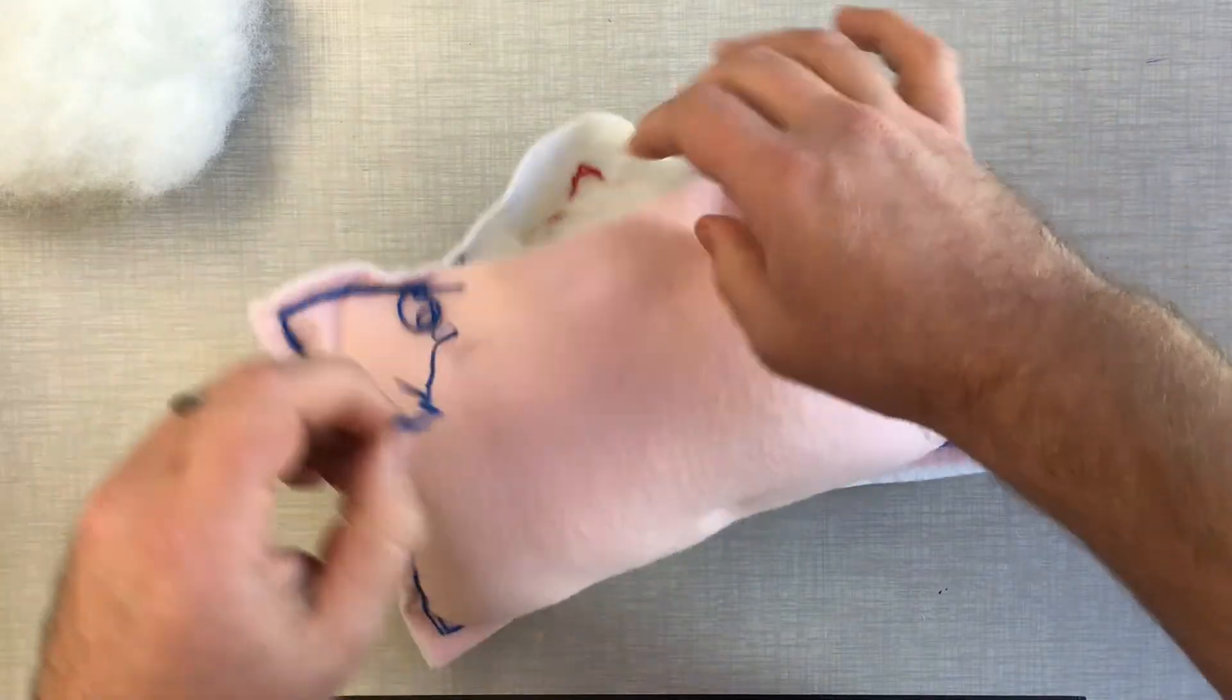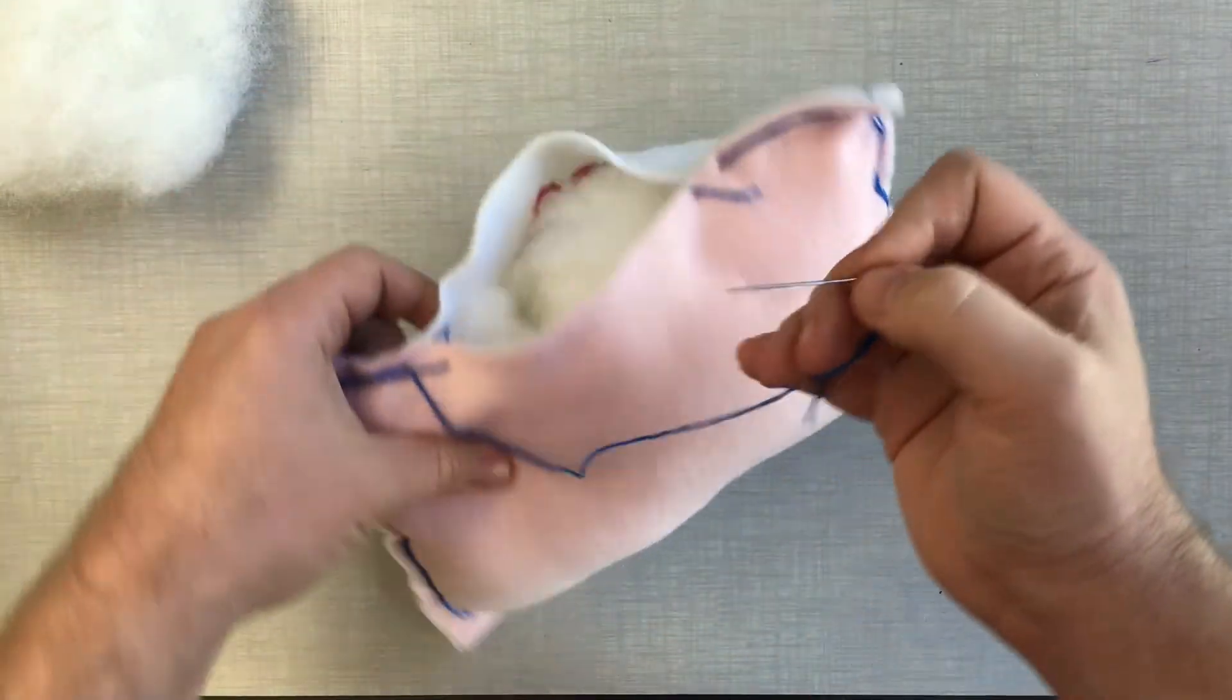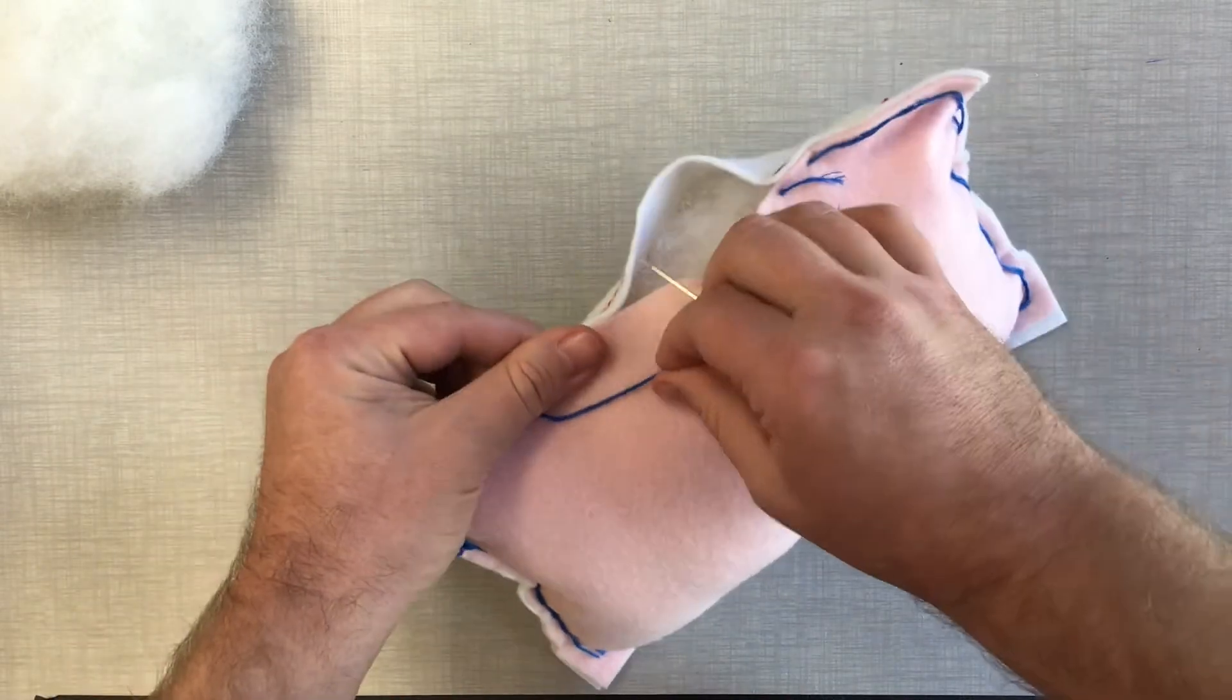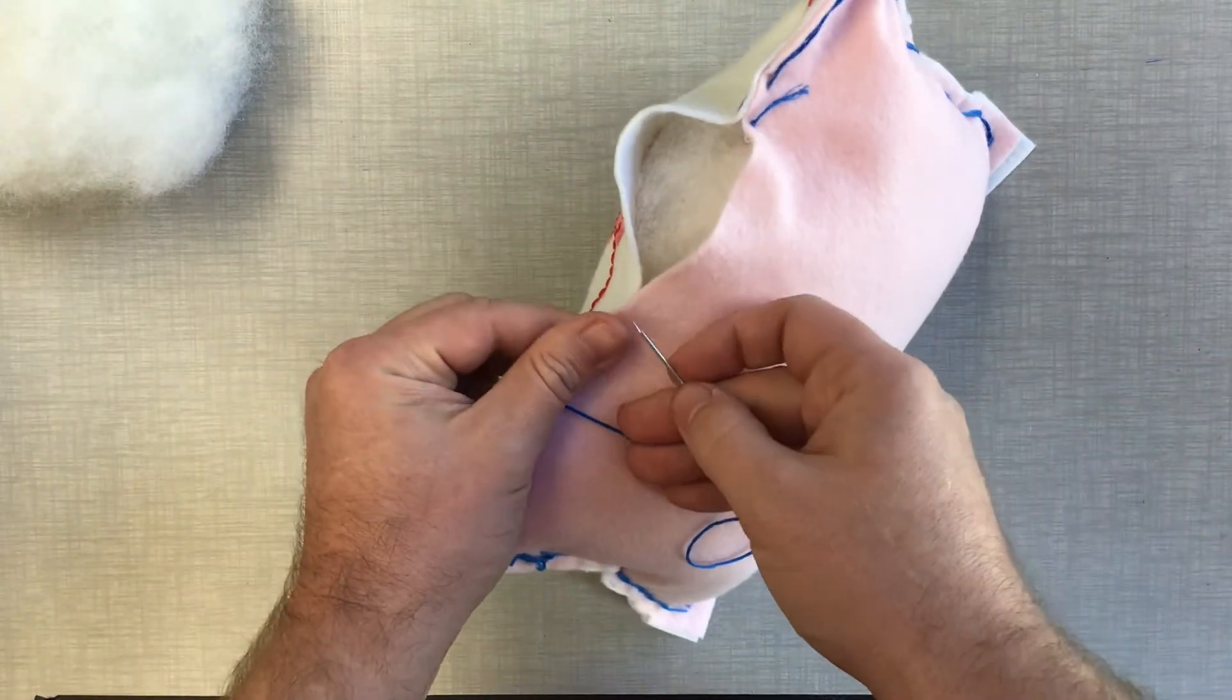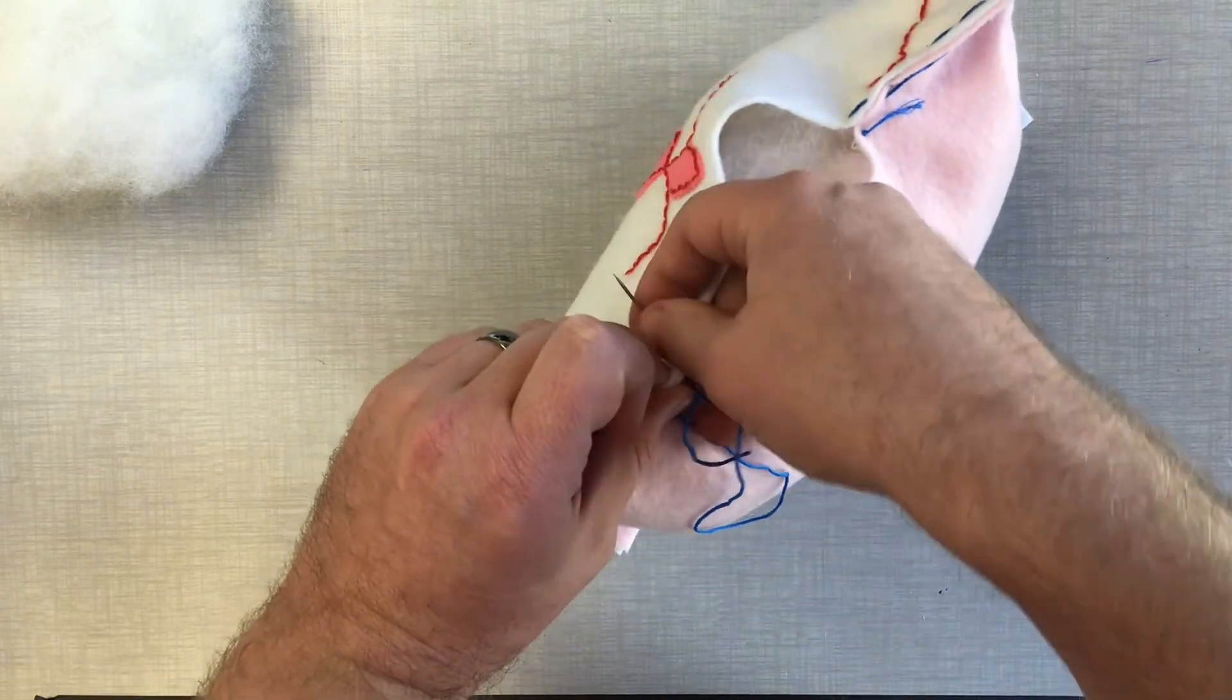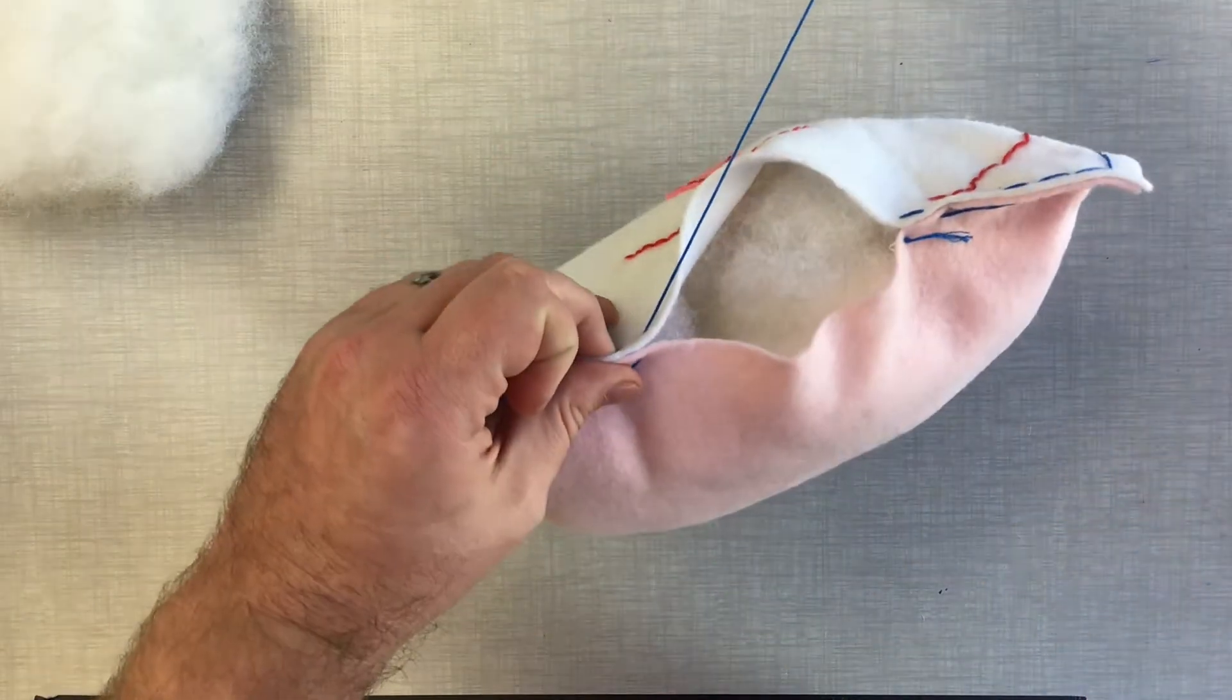This one's a little bit understuffed, but whatever. Stuff it up. So you're going to continue doing the back stitch while kind of holding those pieces together. This is an uncomfortable moment, I will say. This is an awkward part of doing this.